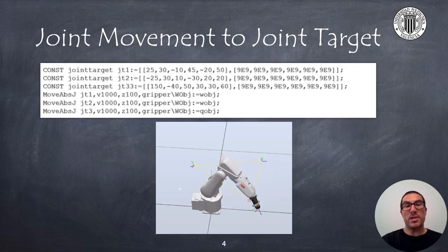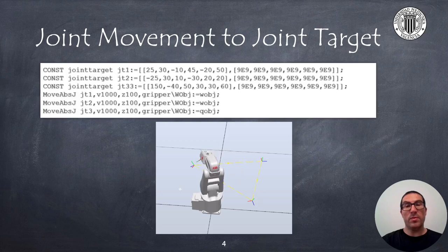Here, we can see an example of code that makes the robot move to three different joint target positions. As you can see, the movements were not linear.